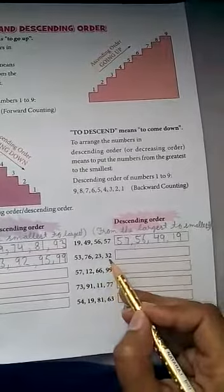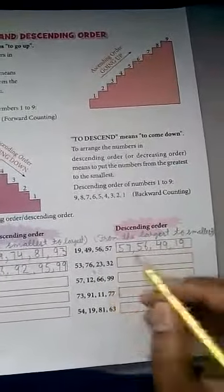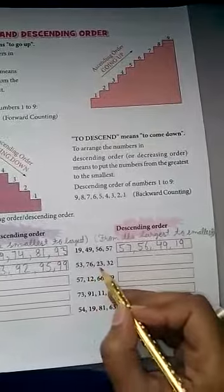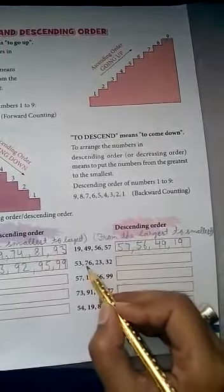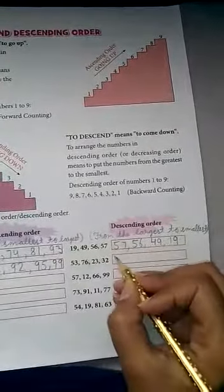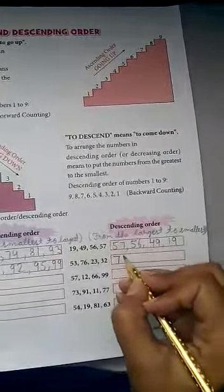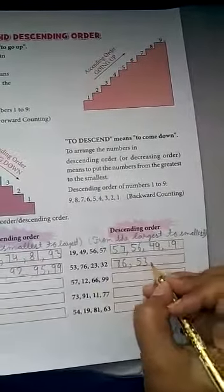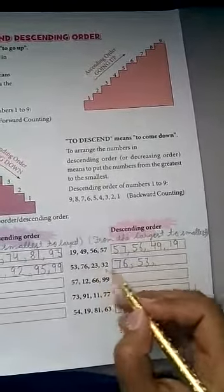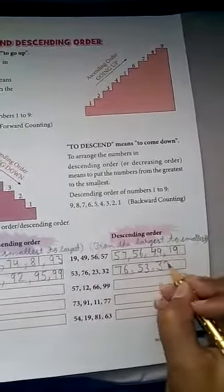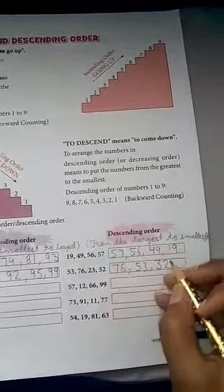Next largest number is 53, then 32, and then 23.